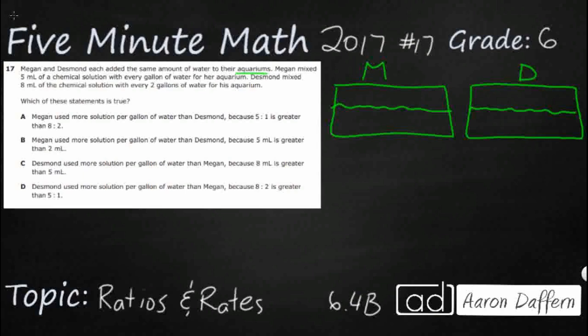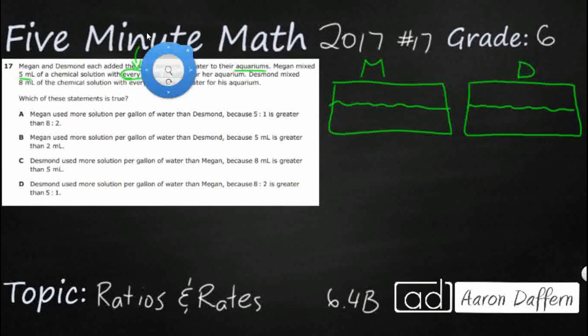So Megan mixed five milliliters of a chemical solution with every gallon of water. So here we have a ratio but it doesn't have a second number. For every means one. So that's kind of a trick right there. It doesn't give us a second ratio.